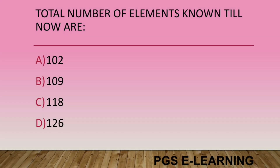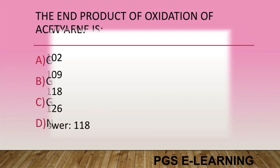Total number of elements known till now are: Option A, 102. Option B, 109. Option C, 118. Option D, 126. Correct answer is 118.